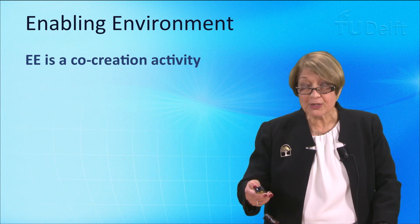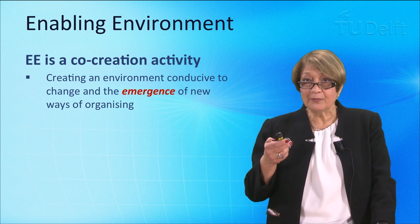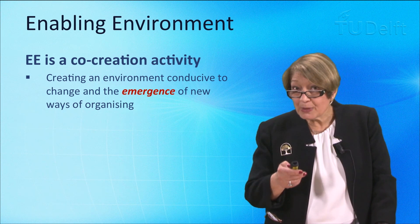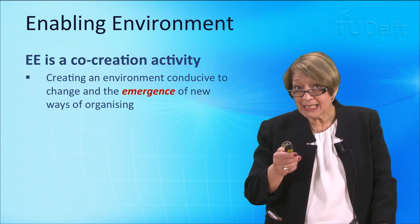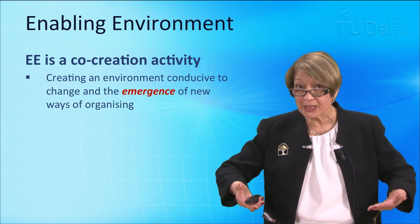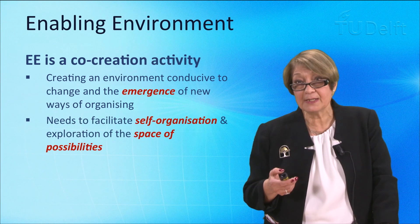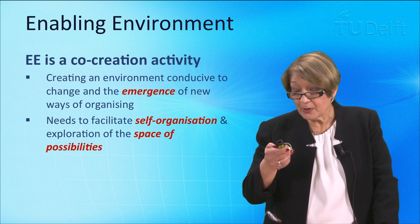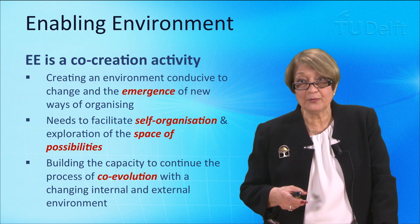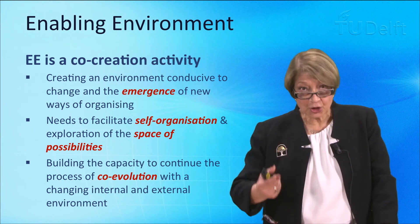Creating an enabling environment is a co-creation activity — it takes everyone involved in that social ecosystem to actually co-create it, and it needs that distributed intelligence to do so. Remember, creating an enabling environment conducive to change and the emergence of new ways of organising means we cannot predict or control what will emerge — we cannot even design it in detail. We can set up the conditions that will facilitate and encourage it, but we cannot control or predict it. We also need to facilitate self-organisation and the exploration of the space of possibilities. We are building capacity to continue that process of co-evolution with a changing internal and external environment — this is not a one-off, but a constant, evolving, co-evolving process.